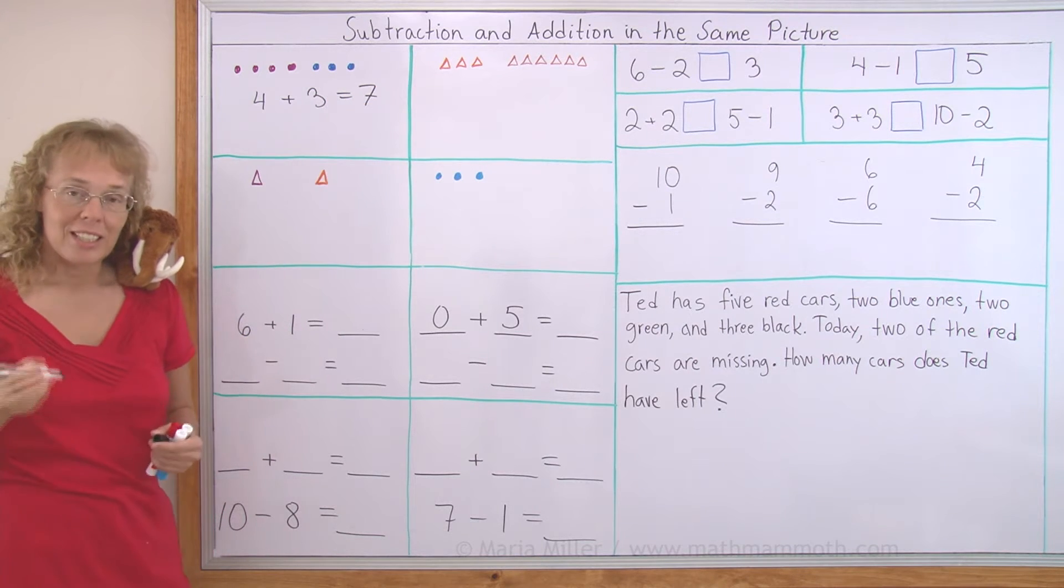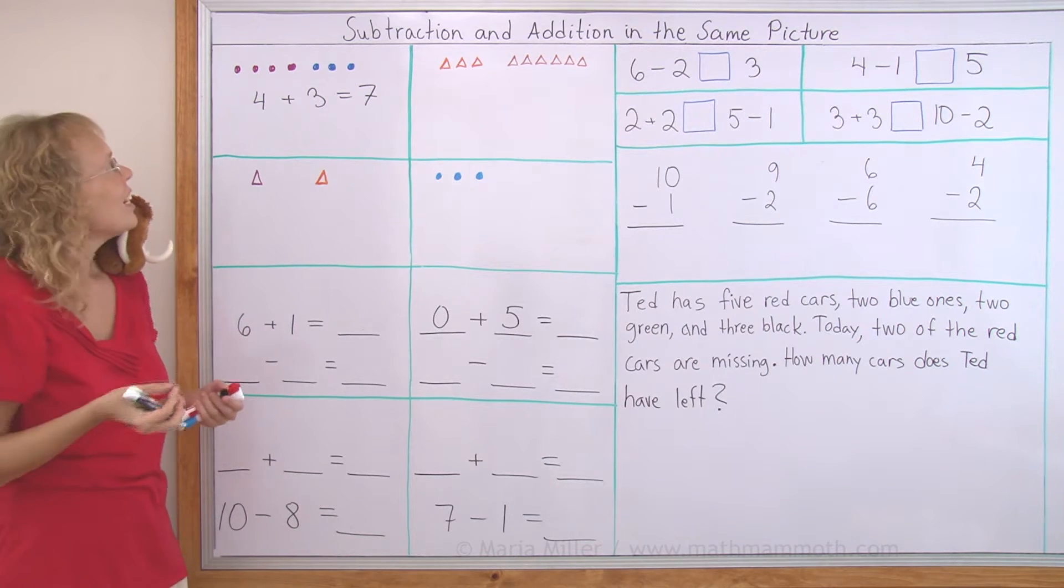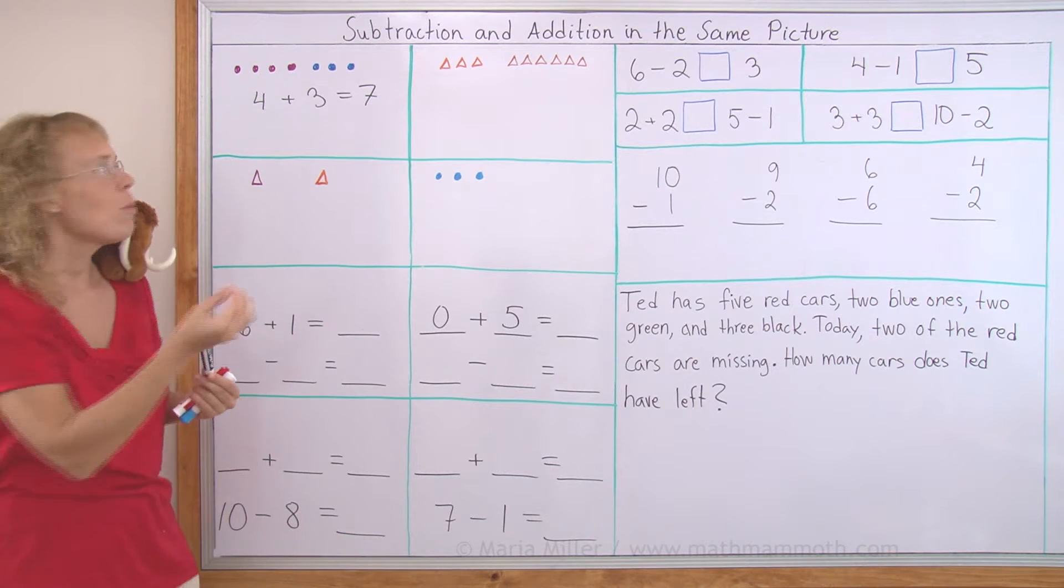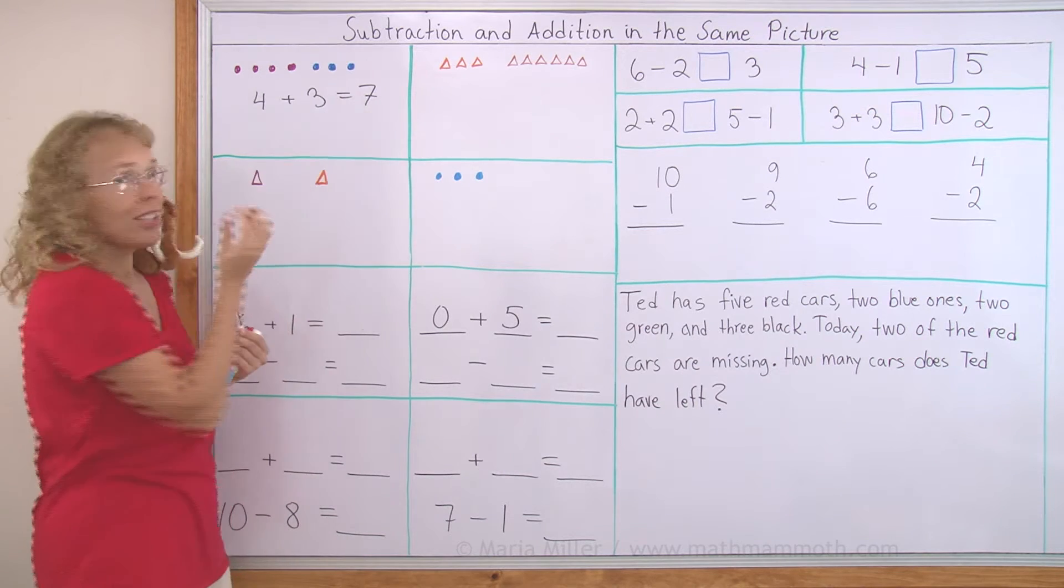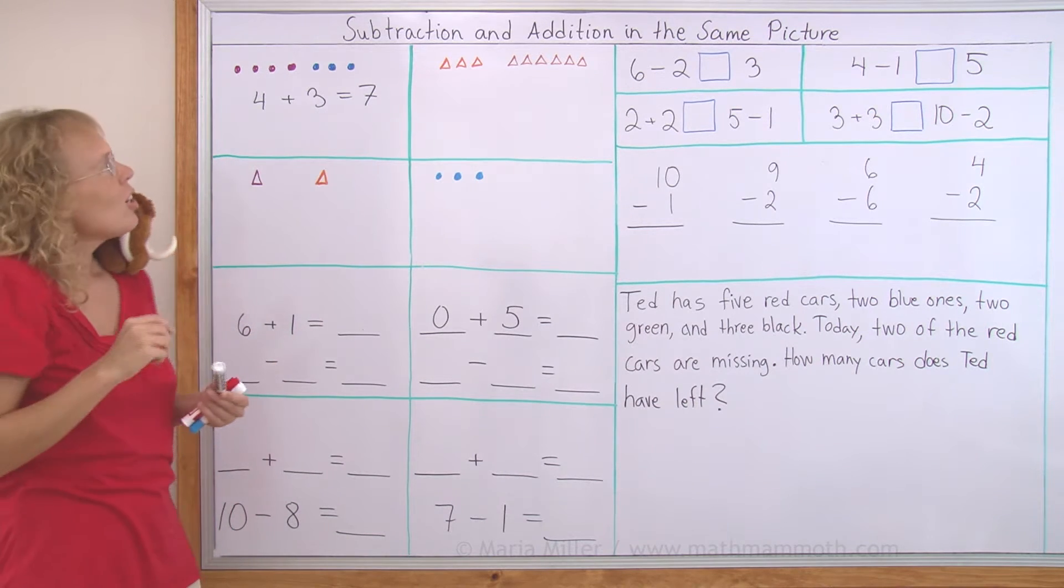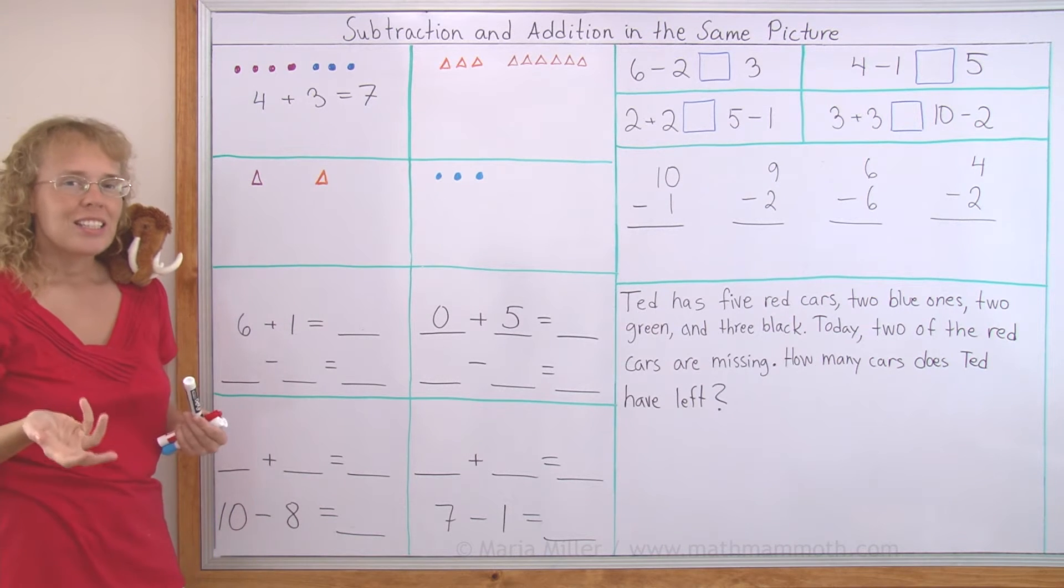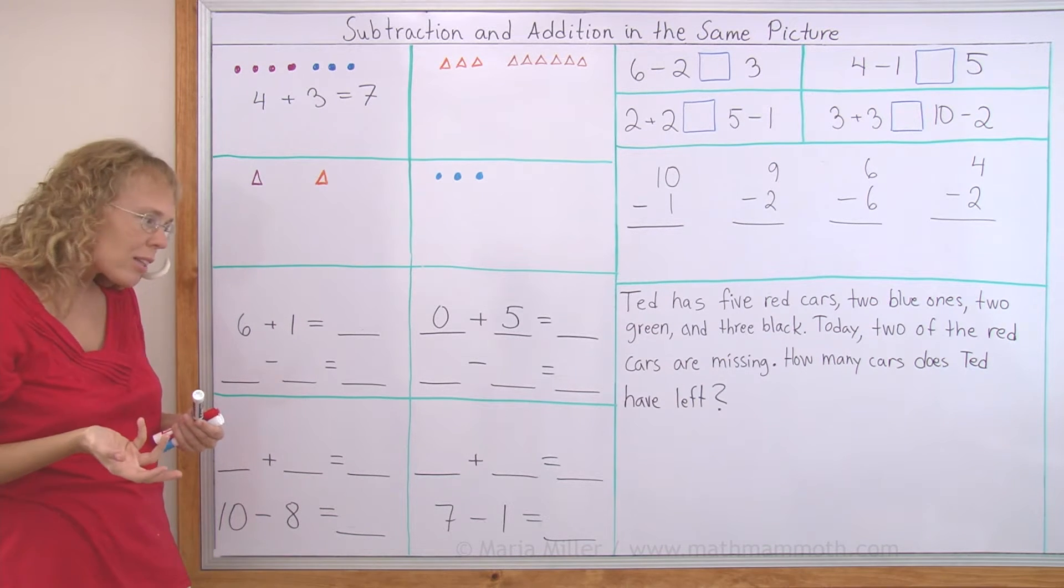But now we also will write a subtraction. For the subtraction you can think of the blueberries going away. If these go away, then we get the subtraction. Or the other possibility is that these lingonberries go away. But let's say the blueberries go away. What's that, Mathie?